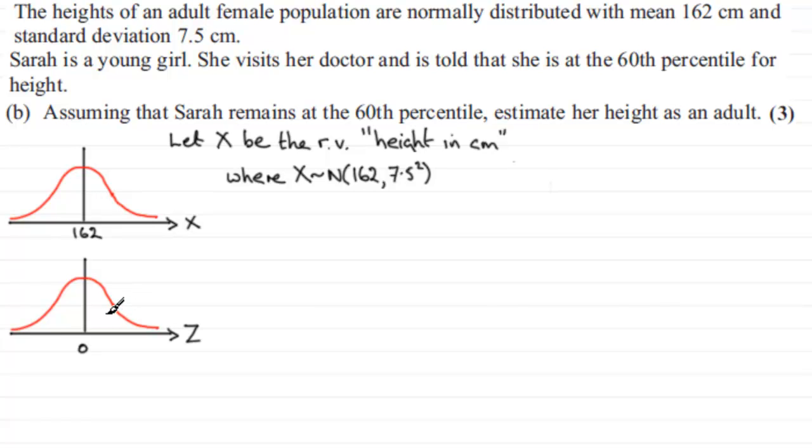So we're looking for where this 60th percentile is going to be. What this means is that there's a probability of 60% of being less than a particular height. So that particular height has got to be over this side to the right of 162, because obviously to the left of 162 that's 50%. So if we've got to be less than 60%, I'll just say that it's there. We'll call this the observed value X.